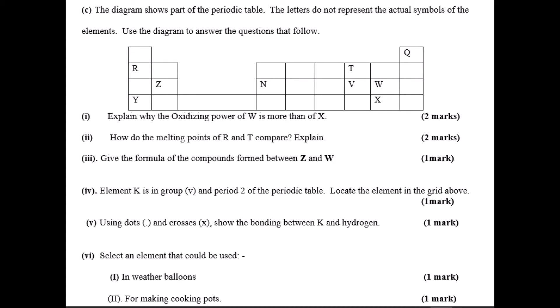Part C: it's a part of the periodic table. You're given some elements: R, Z, Y, N, T, V, W, X, and Q.